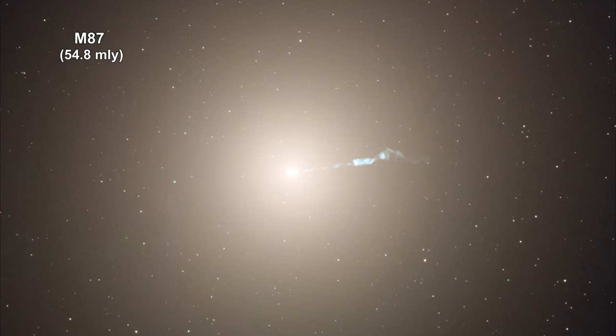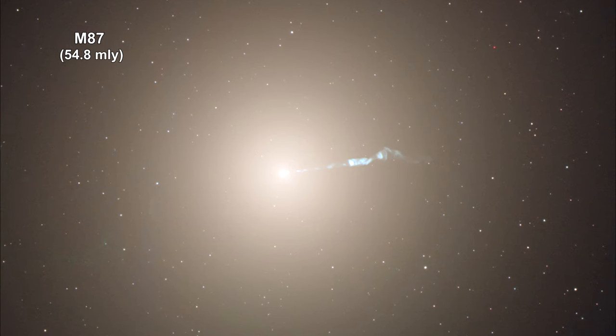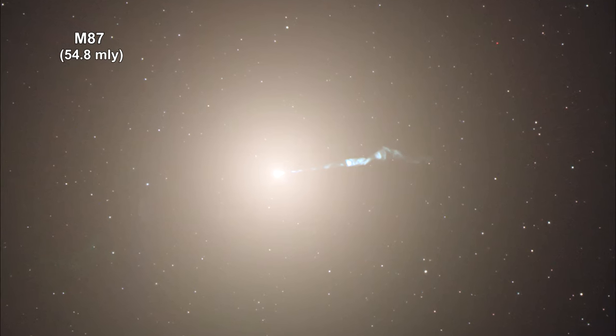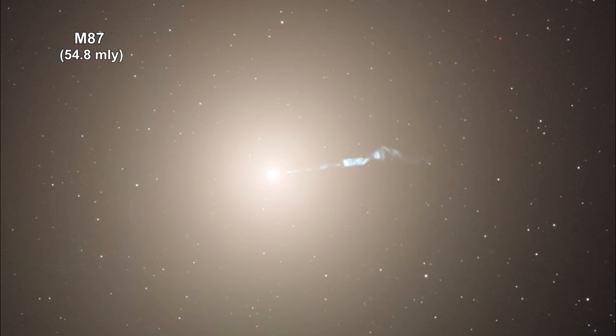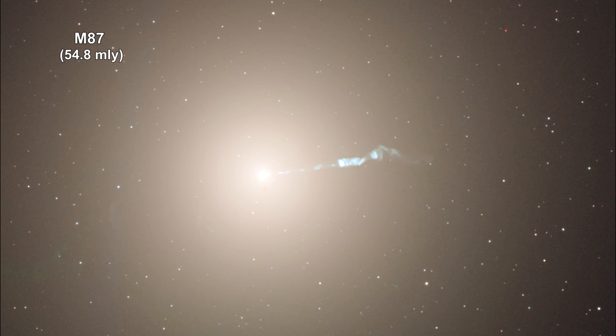The jet of material streaming out from the center indicates that the galaxy has an active galactic nucleus, AGN for short. That is, it has a supermassive black hole at its center that is accumulating large amounts of matter from an accretion disk.